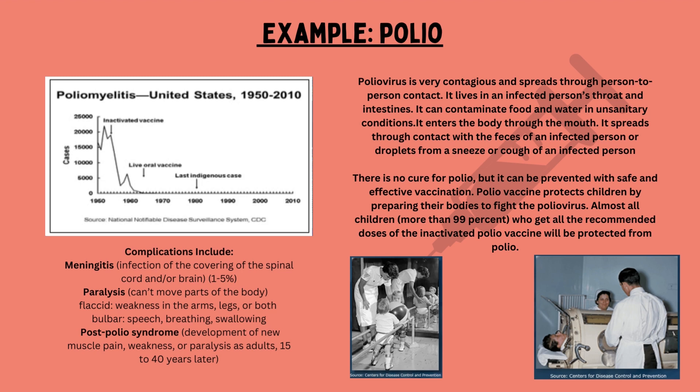Polio virus is very contagious and spreads through person-to-person contact. It lives in an infected person's throat and intestines, can contaminate food and water in unsanitary conditions, enters the body through the mouth, and spreads through contact with feces of an infected person or droplets from a sneeze or cough. There is no cure for polio, but it can be prevented with safe and effective vaccination. Almost all children who get the recommended doses of inactivated polio vaccine will be protected.